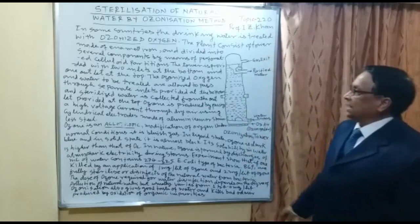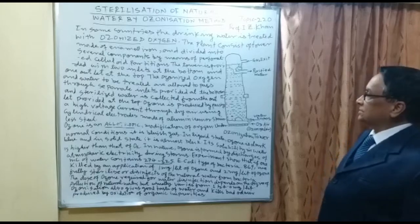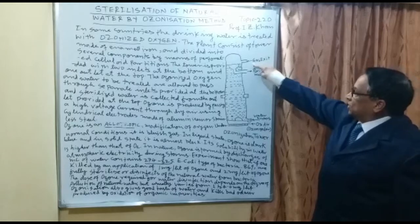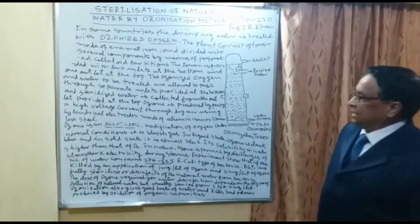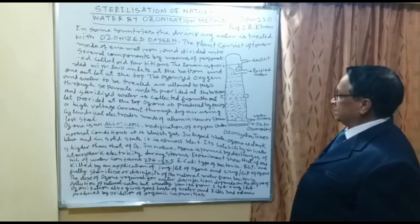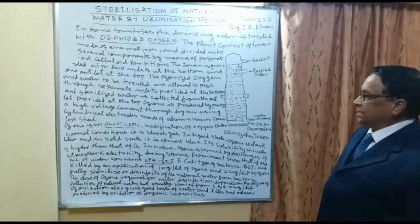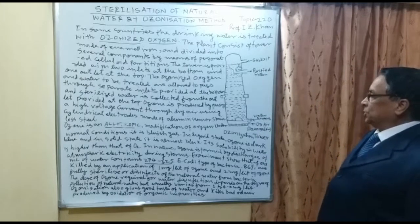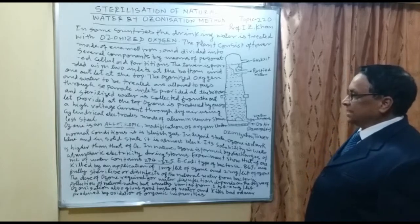The tower is provided with two inlets at the bottom and one outlet at the top. This is the outlet from where the treated ozonized water is collected. The ozonized oxygen and water to be treated are allowed to pass through separate inlets provided at the bottom, and sterilized water is collected from the outlet at the top.